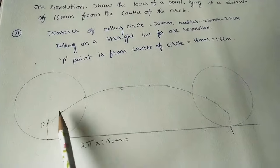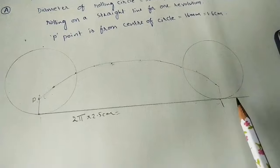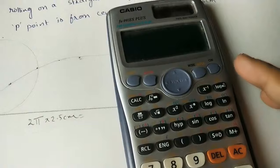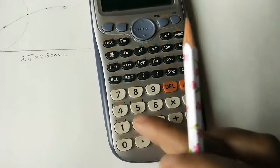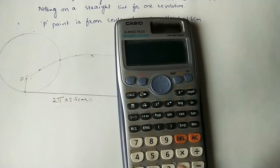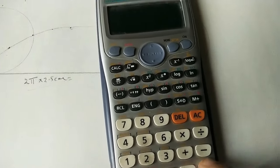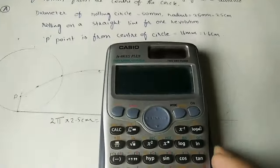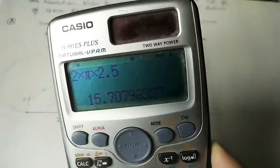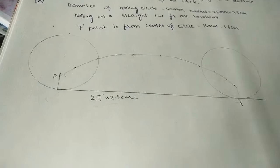Now let us calculate the actual length. The circle rolls one complete revolution, so the distance traveled is 2πr. Using a calculator: 2 × π × r, where r = 2.5 cm. The result is 15.7 centimeters. This is the length of the straight baseline we need to draw.